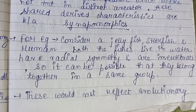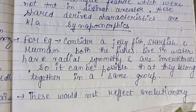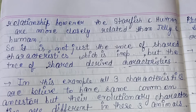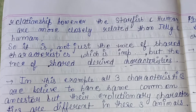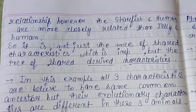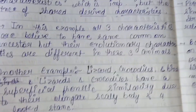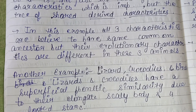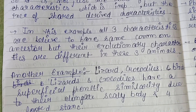Consider jellyfish, starfish, and humans. Both jellyfish and starfish live in water, have radial symmetry, and are invertebrates, so it might seem they belong in the same group. However, this would not reflect evolutionary relationships — starfish and humans are actually more closely related than jellyfish and humans. It is not just the presence of shared characteristics but shared derived characteristics that is important. All three are believed to share a common ancestor, but their evolutionary characteristics differ.